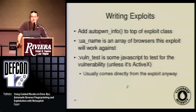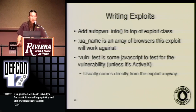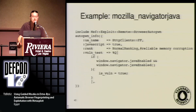We have a UA name, which tells us which browser this is going to work against. We have VulnTest, which is a piece of JavaScript to run before we determine that this exploit will work, unless it's ActiveX. All of the information you need to go into VulnTest comes from the exploit anyway — it's everything you already had to know to make the exploit work. Here's an example with Mozilla Navigator Java: you have to have Java installed, which we can determine based on the existence of javaEnabled. If that is true, we're good to go and go ahead and try this exploit.